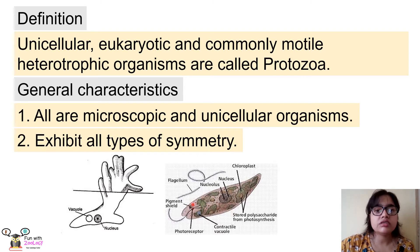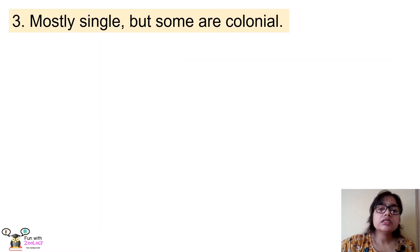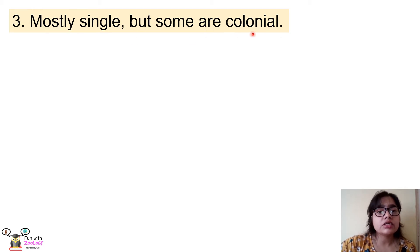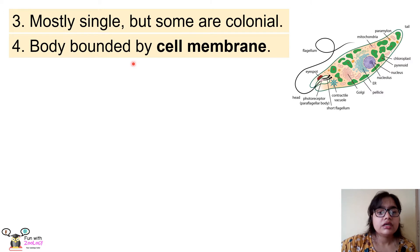The third point is that most protozoans are solitary — they live alone — but some protozoans are colonial, meaning they live in groups. The fourth point is that the body of protozoans is bounded by a cell membrane. All animal cells are bounded by a cell membrane, and since protozoans are made up of only one cell, that cell is also bounded by a cell membrane or plasma membrane.